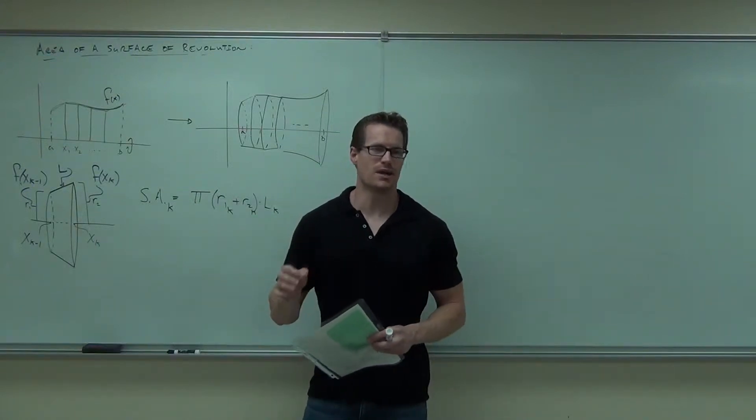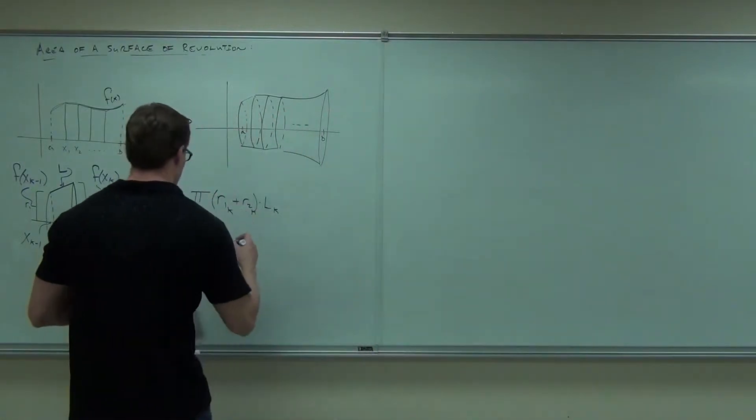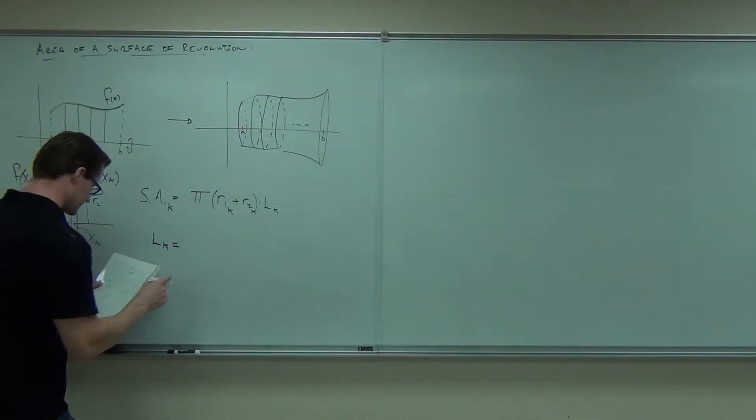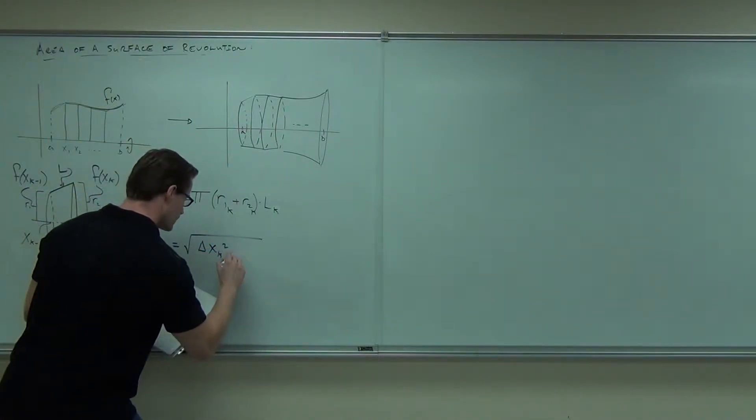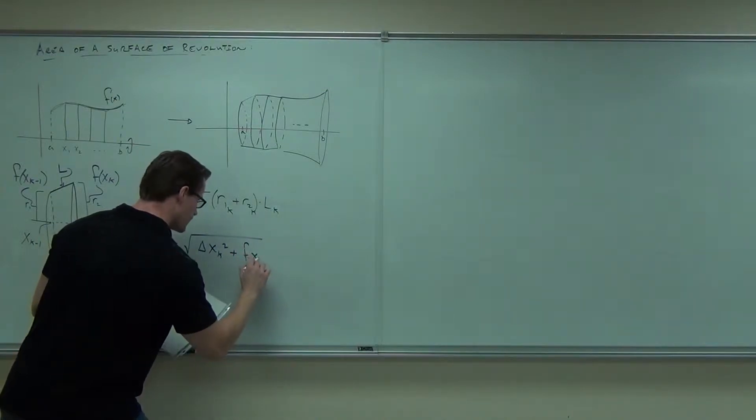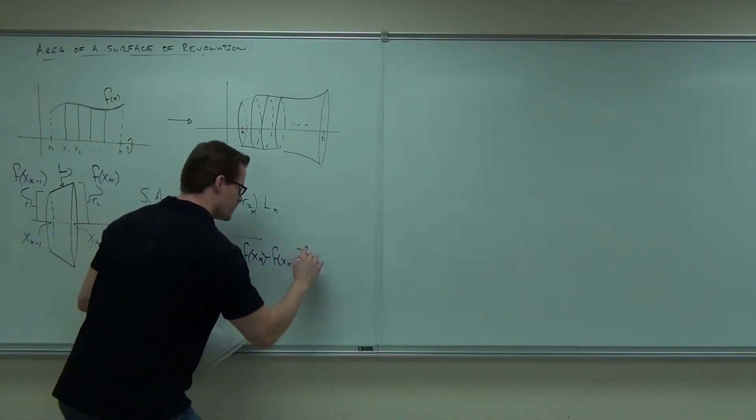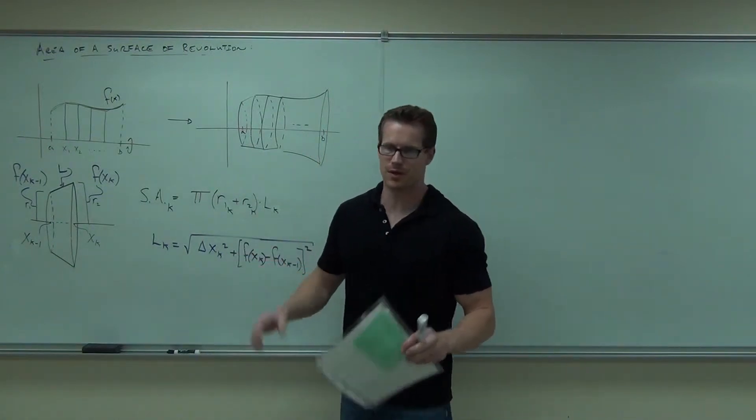We've already found out how to find the length of a curve. We know that L was this. L was that, and you can get that simply by Pythagorean theorem, if you really think about it.